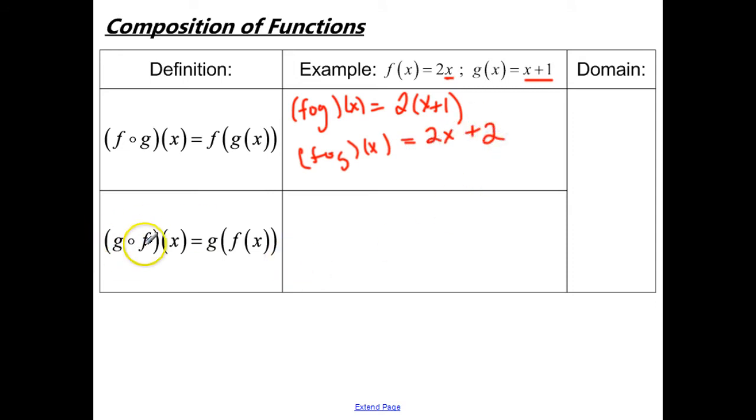Now here we have g of f of x, so we're going to take the f function and put it inside the g function. So we start off with the g function, but here where we see the x, that's where we're going to put in this f of x function. So 2x, and then we finish off the g function plus 1.